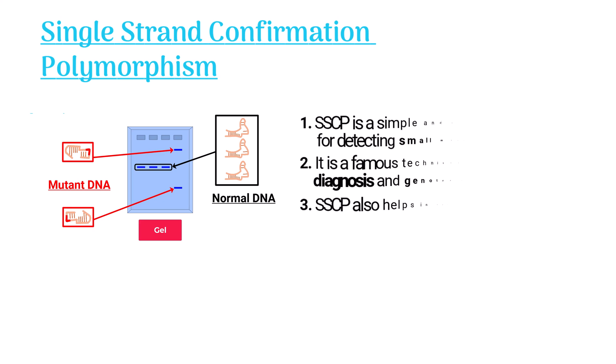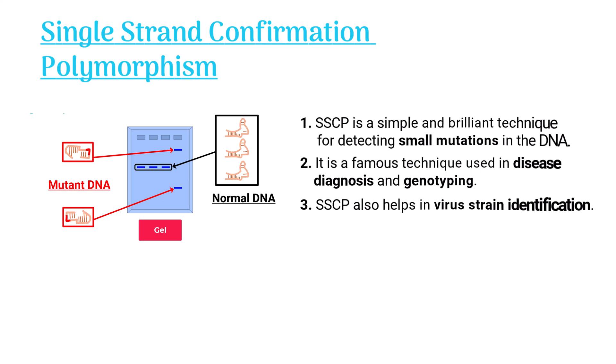SSCP is a simple and brilliant technique for detecting small mutations in the DNA. It is a famous technique used in disease diagnosis and genotyping. SSCP also helps in virus strain identification.